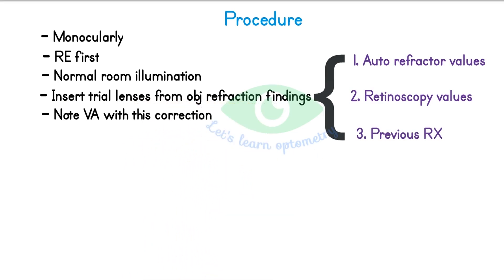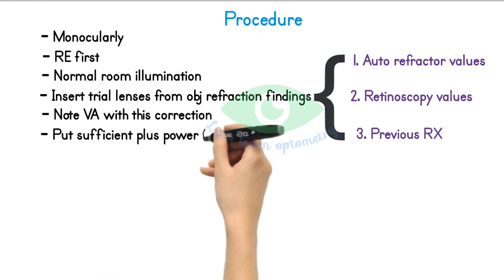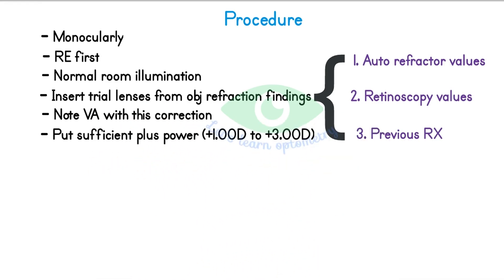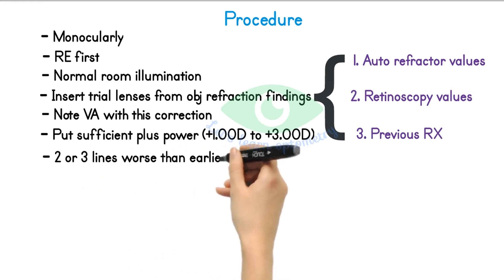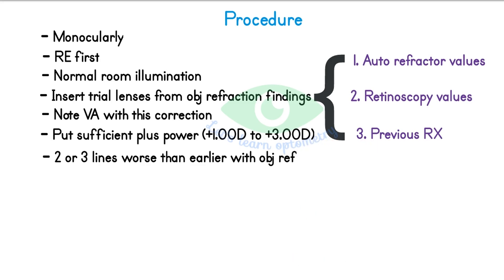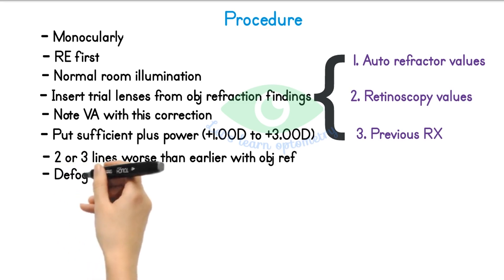Now put sufficient plus power over the objective findings until the visual acuity is 2 or 3 lines worse than the earlier acuity with the objective findings in place. If not, keep increasing the plus until you get 2 or 3 lines worse acuity than earlier. If the patient is found to be sufficiently fogged, you can move to the defogging process.